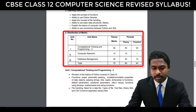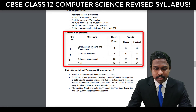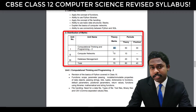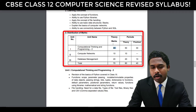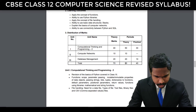Now most importantly, the distribution of marks. You have three units — Computational Thinking and Programming 2, where Programming 1 is already finished in Class 11. This carries 40 marks theory marks, so it has the highest weightage. Then Computer Networks, which is 10 marks, and Database Management, which is 20 marks. So the total adds up to 70 marks. For teachers, that's 80 periods for theory and 40 periods for practical.